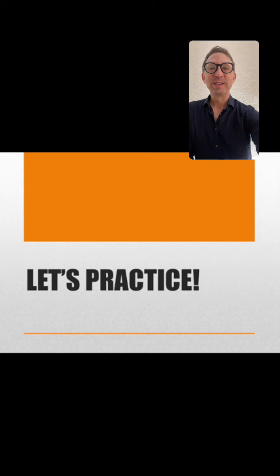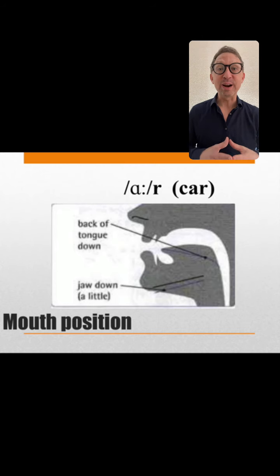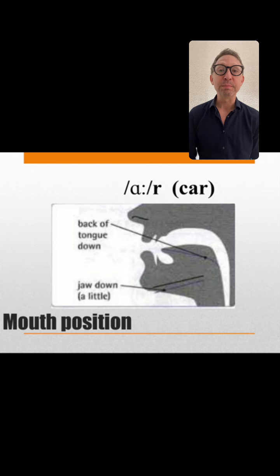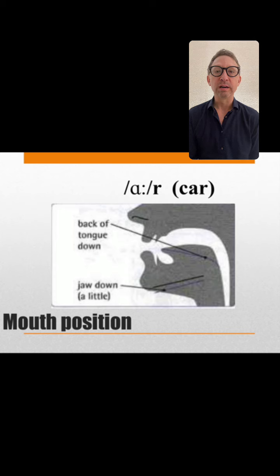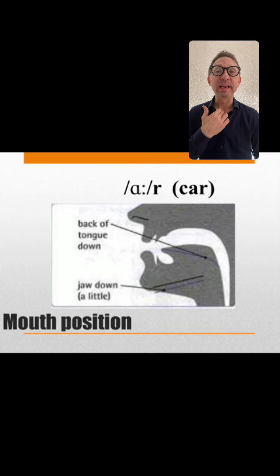Let's begin with the A-R sound. You pronounce that in the back of your throat. A-R. Let's say the A-R — it's in the very back. A-R. We're going to pronounce it with the R: A-R. Car. That's in the very back. The throat is open, the mouth is slightly open, and it comes from the very back of the throat.